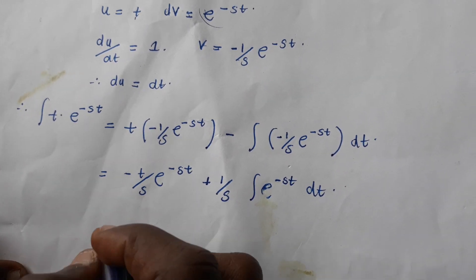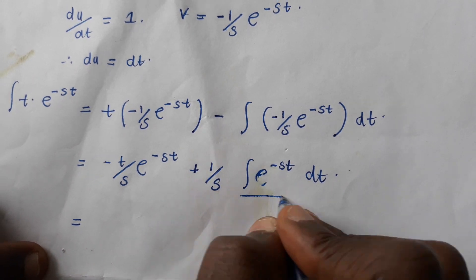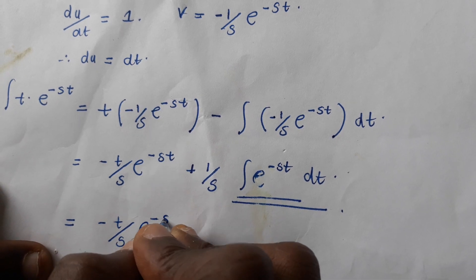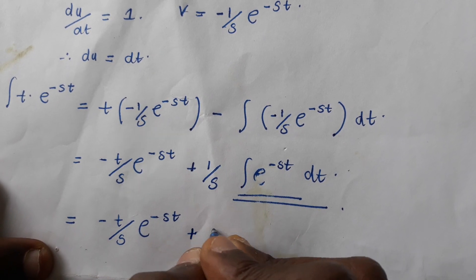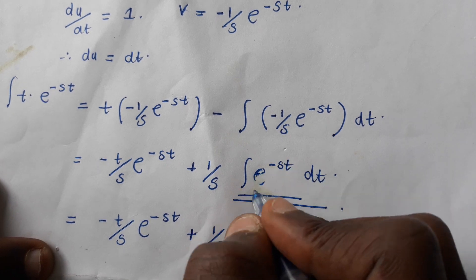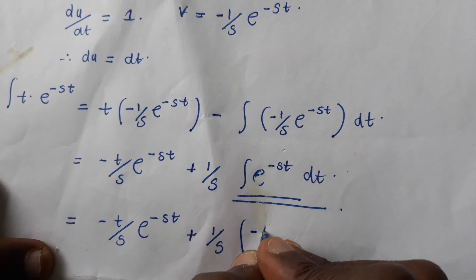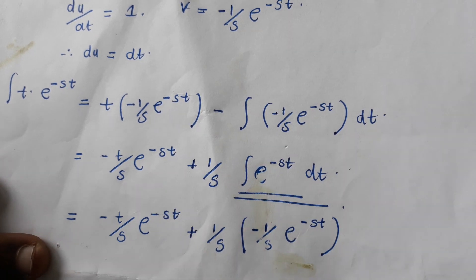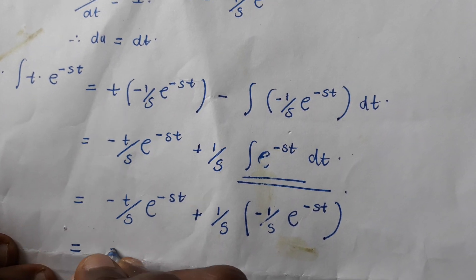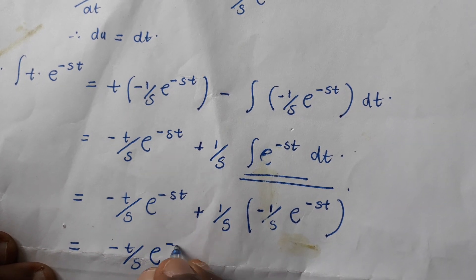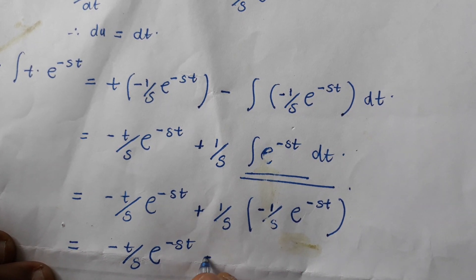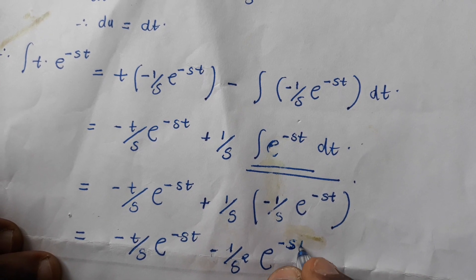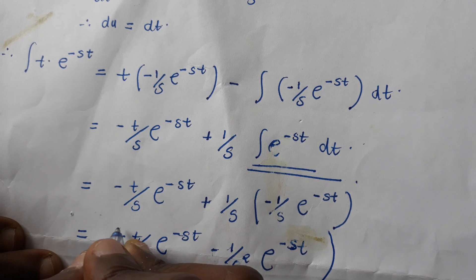Integrating e^(−st) with respect to t gives us: minus t over s times e^(−st), plus 1 over s multiplied by minus 1 over s times e^(−st). This simplifies to minus t over s times e^(−st) minus 1 over s² times e^(−st). Now we can subject this to our limits, with the lower limit 0 and upper limit infinity.